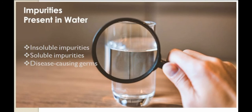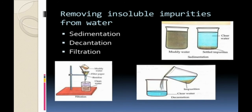Water contains different types of impurities. Insoluble impurities can be seen in water. Soluble impurities cannot be seen in water. The third type is disease-causing germs.